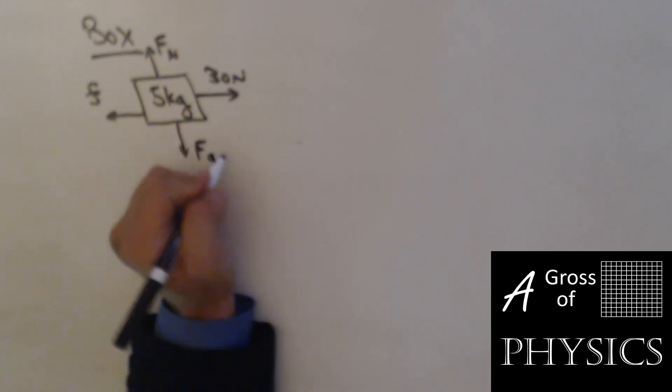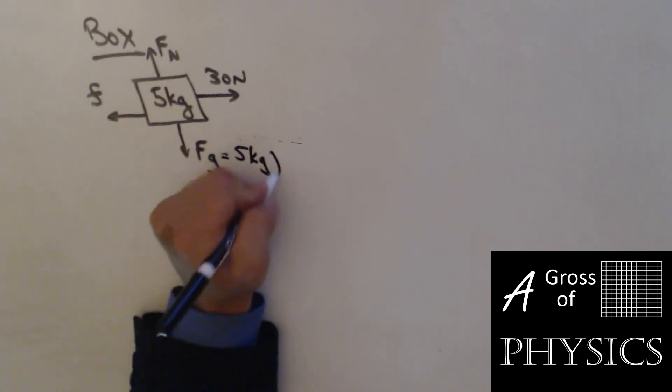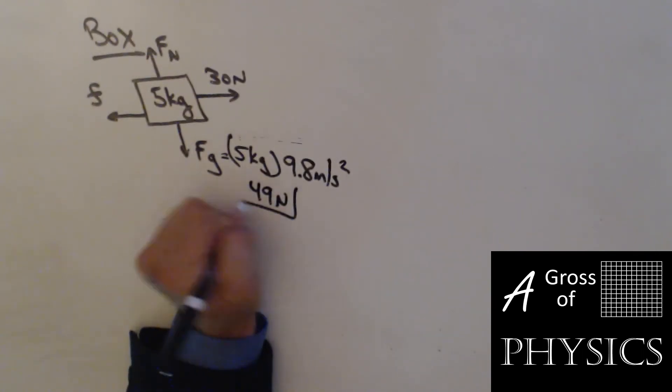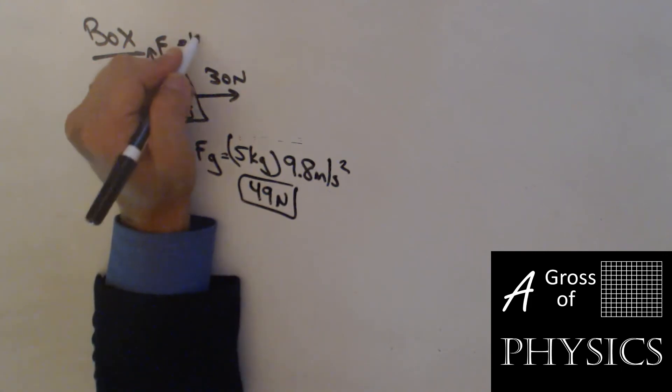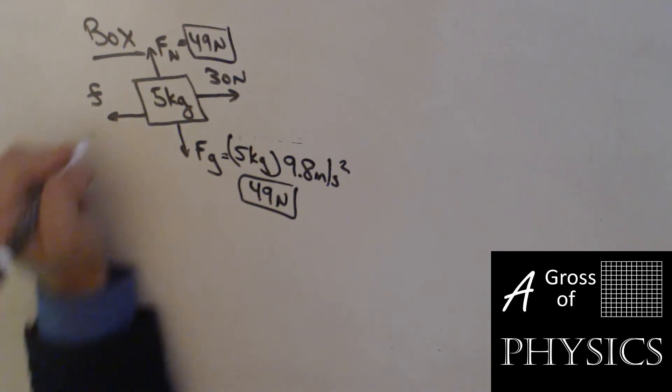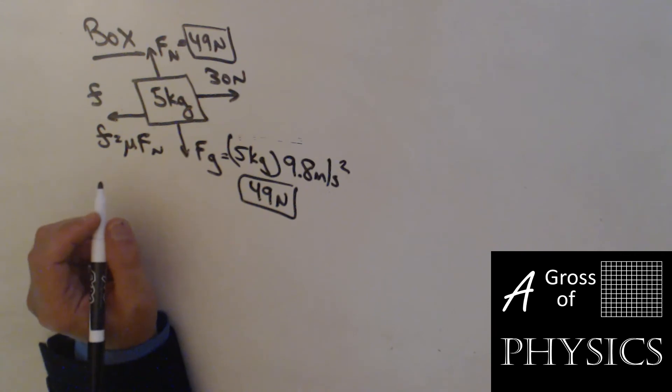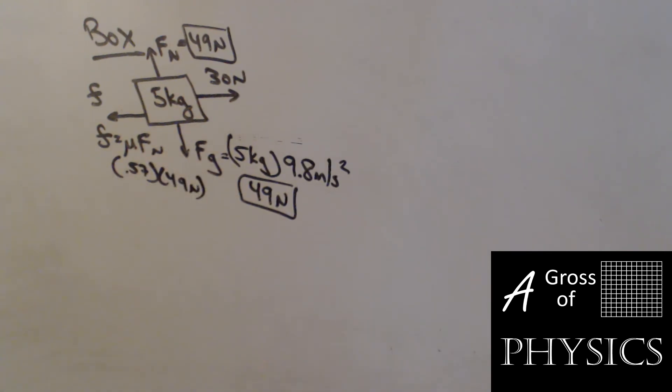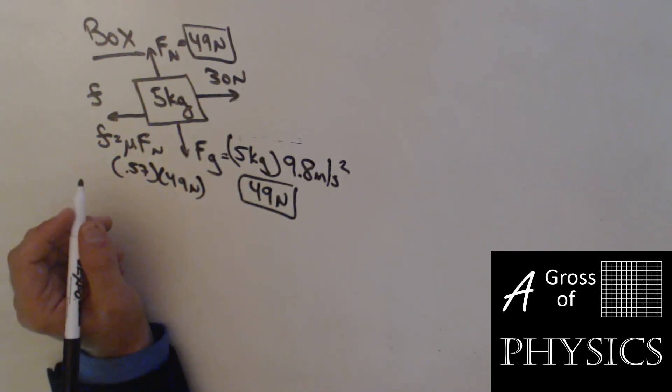Force of gravity, five kilograms times 9.8 meters per second squared, 49 newtons. That's also the normal force, 49 newtons. Friction, which we know as mu times Fn, we have to find the mu. Steel on steel is 0.57 times 49. 0.57 times 49, I get 27.93.